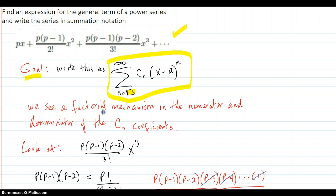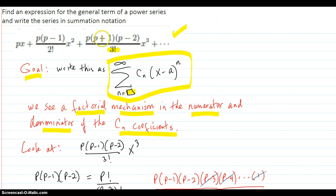We see a factorial mechanism in the numerator and the denominator of the cn coefficients. We see this here — it's like a factorial: p, p-1, p-2, and it stops right there. It would have gone on p-3, p-4.